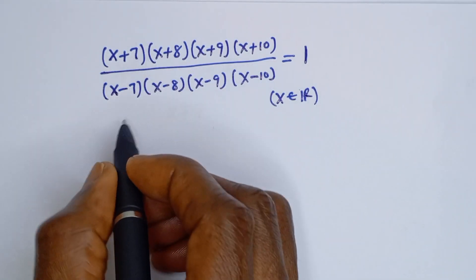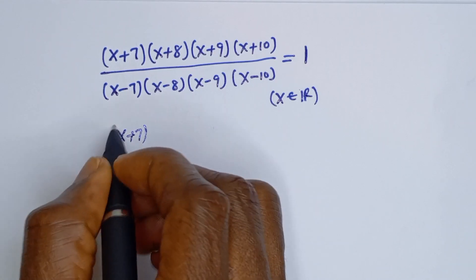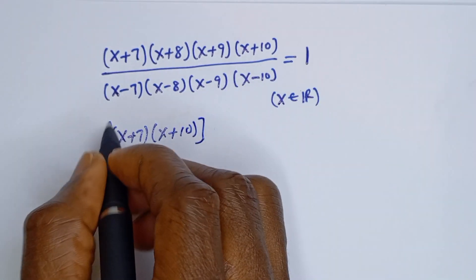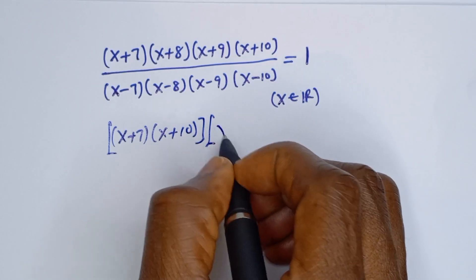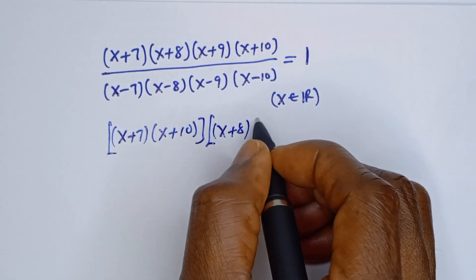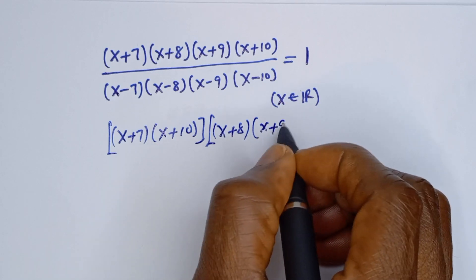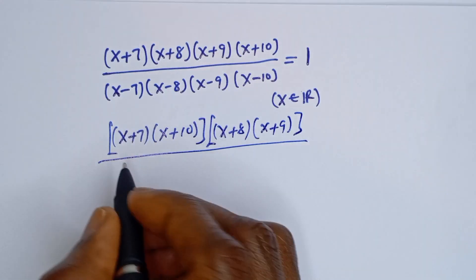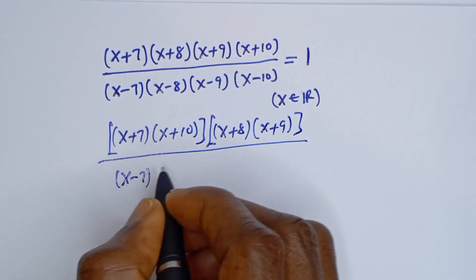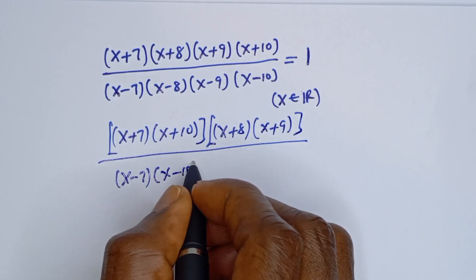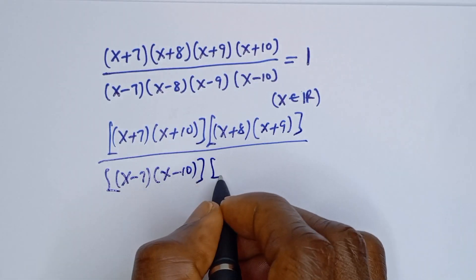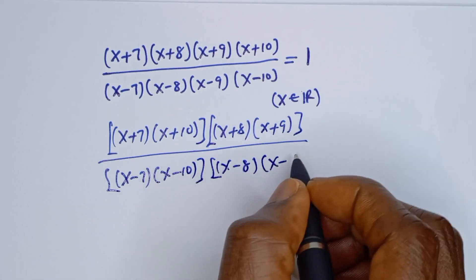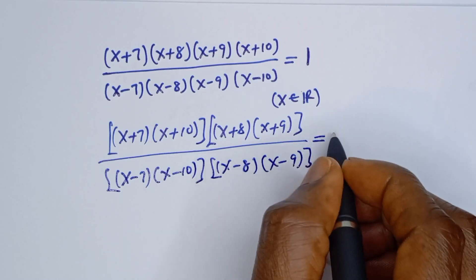We have S plus 7 bracket S plus 10, then multiply by S plus 8 bracket S plus 9, divided by S minus 7 bracket S minus 10, then multiply by S minus 8 bracket S minus 9. Everything is equal to 1.